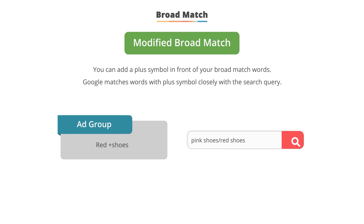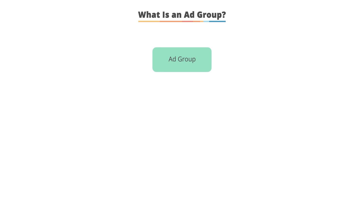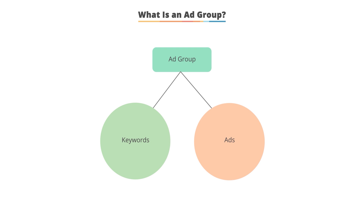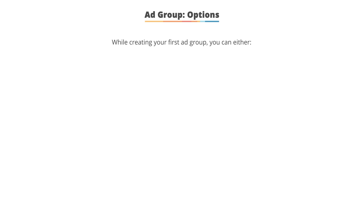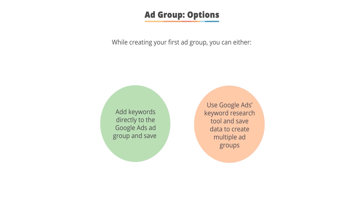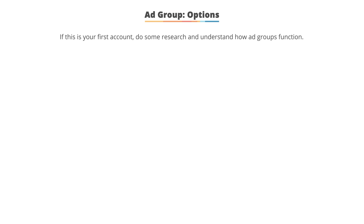When getting started with keyword match types, modified broad is a really good one to start with, along with exact match. An ad group is a collection of keywords and ads. We first need to put keywords in our ad group to understand what's going to trigger our ads, and then we'll create the ads later on. You have two options when creating your first ad group: you can conduct keyword research right on the screen as you're creating an ad group and save keywords right to it, or you can go to the Google Ads keyword research tool and research a lot of keywords and ad group concepts at once.